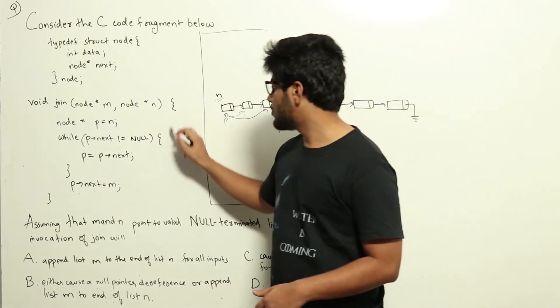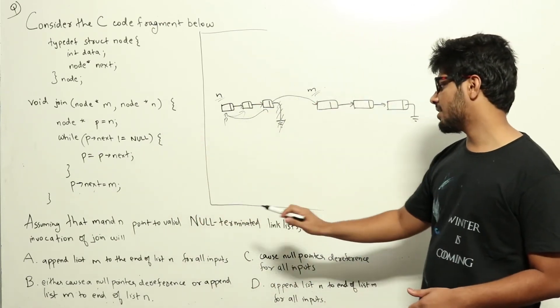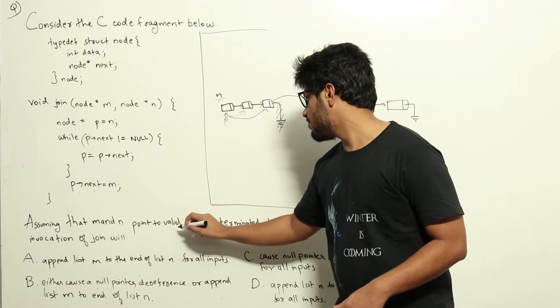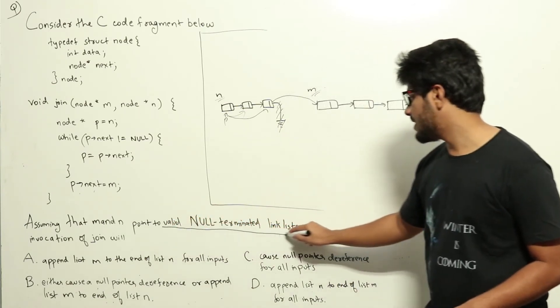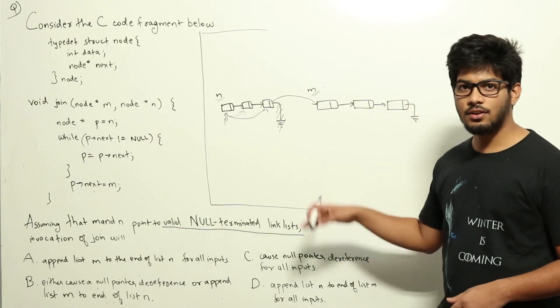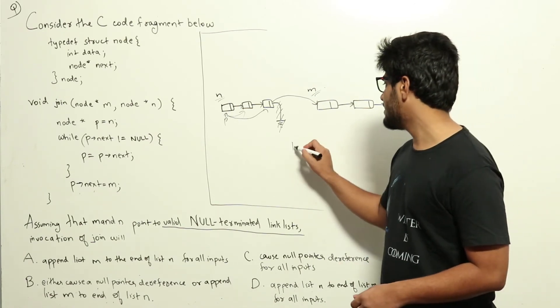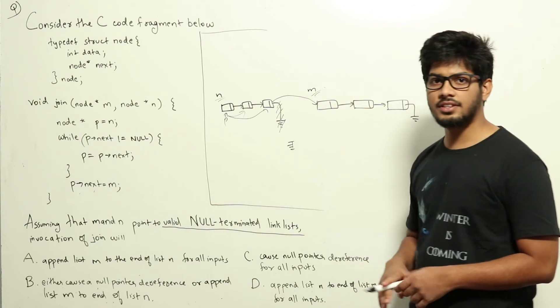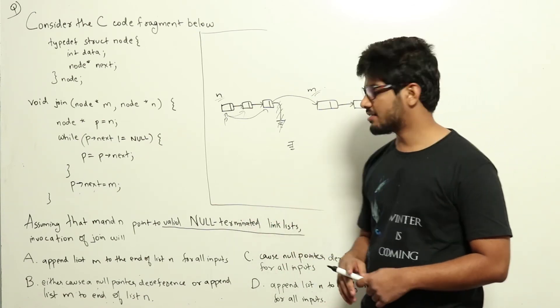Now, there is one small issue here. In the question they are giving us that M and N point to valid null terminated link lists. But nowhere have they given that the link lists are non-empty. Even an empty link list which only starts with null is also a valid null terminated link list.